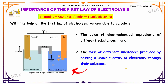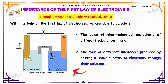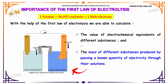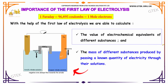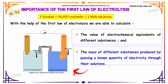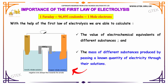Let us now discuss the importance of the first law of Electrolysis. With the help of the first law of Electrolysis, we are able to calculate the value of electrochemical equivalence of different substances and also the masses of different substances produced by passing a known quantity of electricity through their solutions.